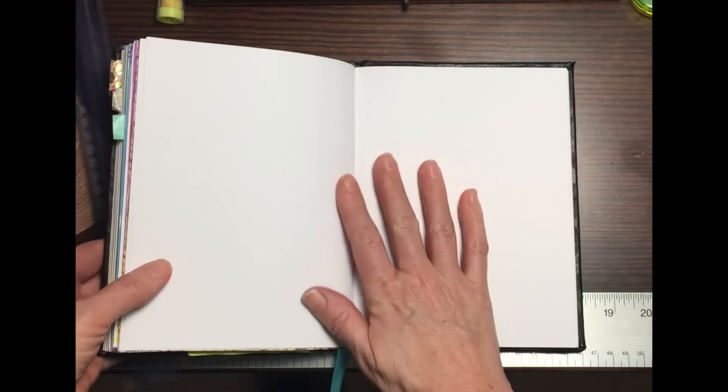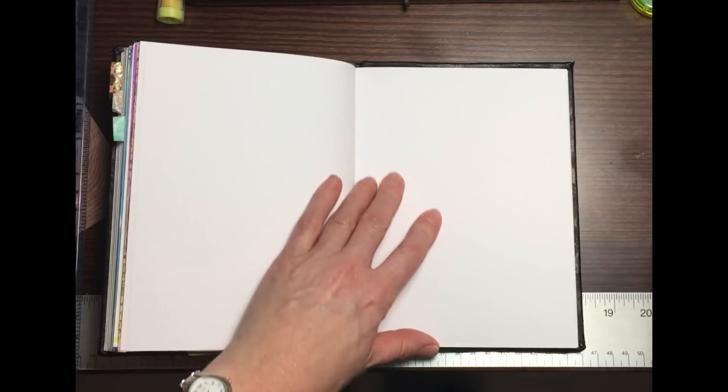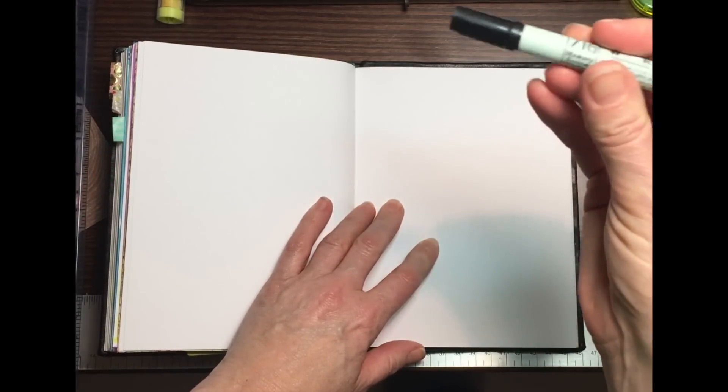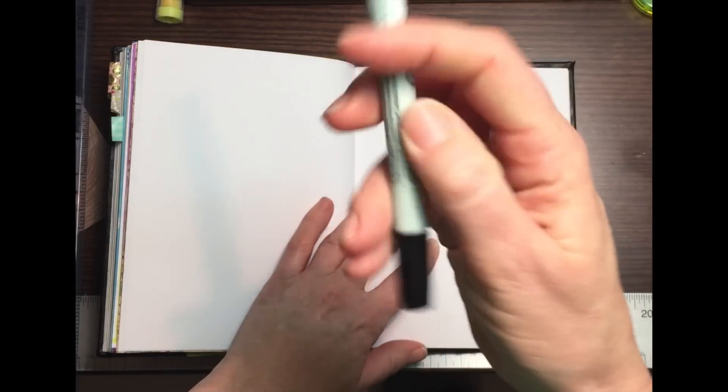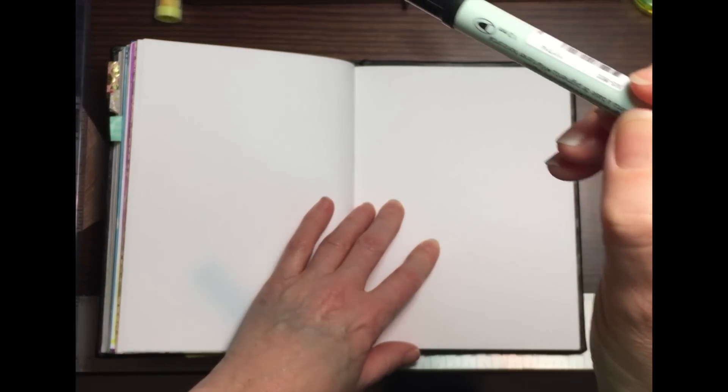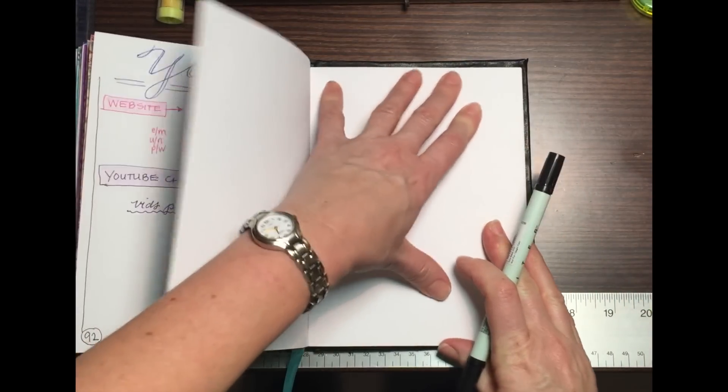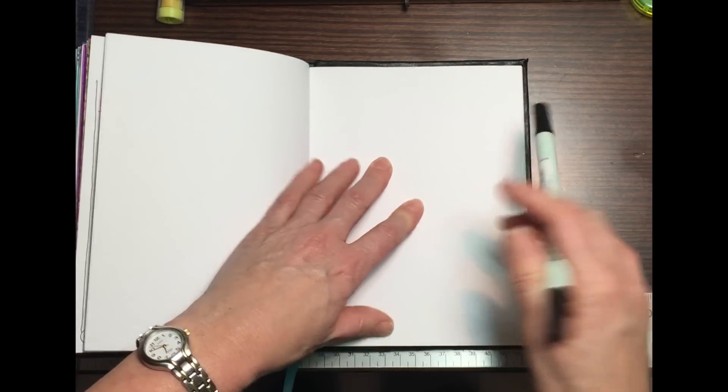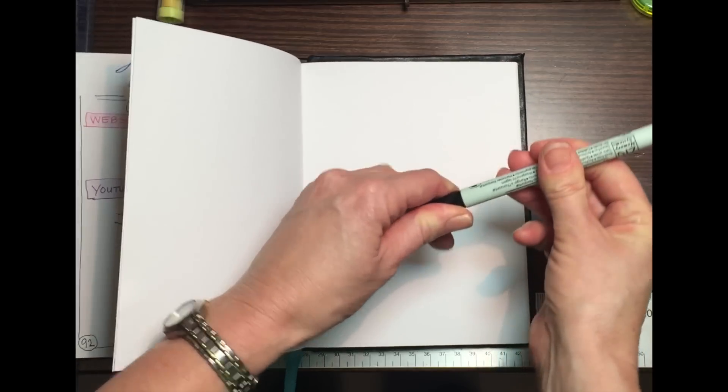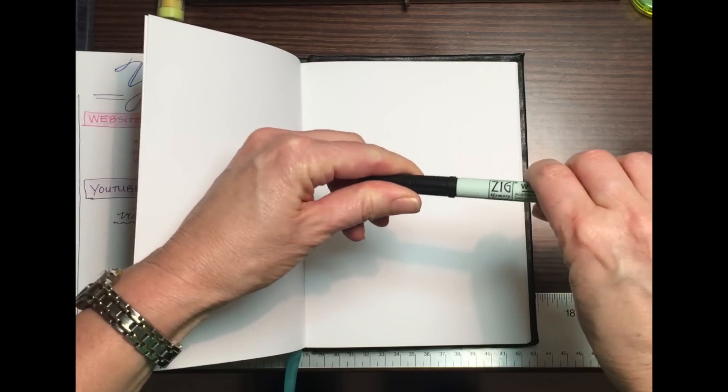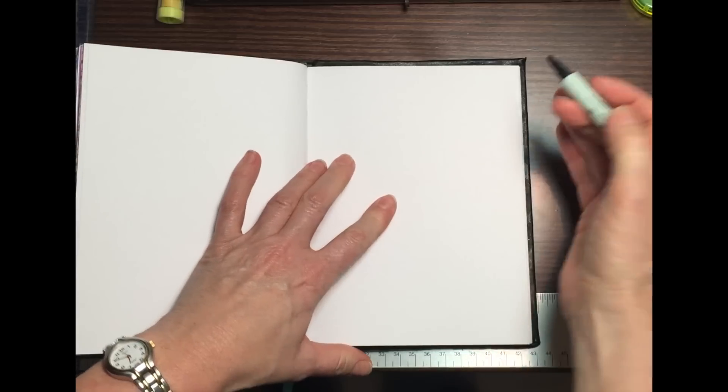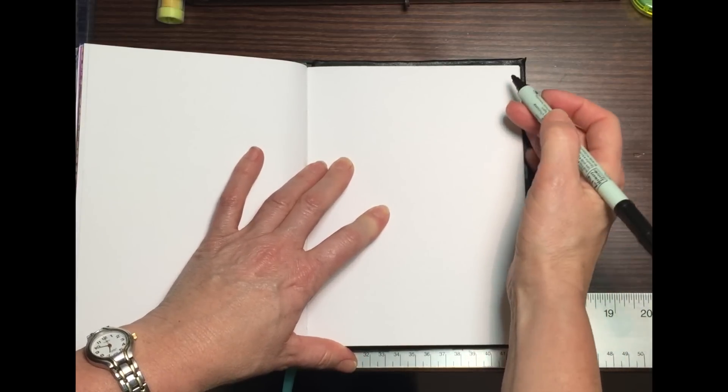So all you need to do is grab your handy dandy pen. I'm going to use kind of a fat marker so you can see what I'm doing. Open up your journal and get it on a nice solid surface so you can press down.